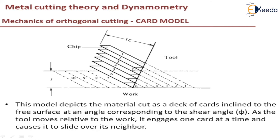However, in the card model there are certain assumptions made — such as shear occurring on a perfectly plain surface — which may not actually be as indicated in the figure. It does not explain the chip curling process, and it ignores built-up edge formation. Once built-up edge formation is present, deformation will not occur layer by layer. It also exaggerates the inhomogeneity of the strain. These are several models which depict the mechanics of orthogonal cutting.